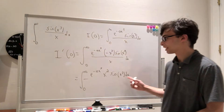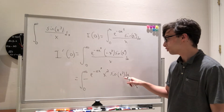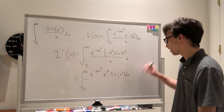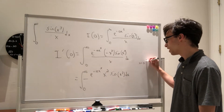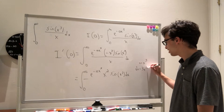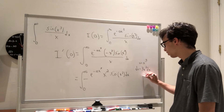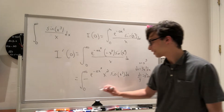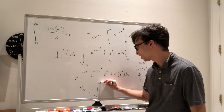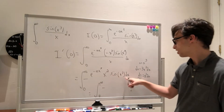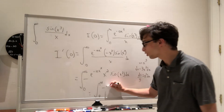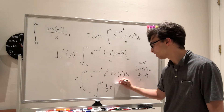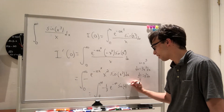This integral is actually not that bad at all, because we can do a u-sub: u equals x cubed. That will make the inside of the sine go away, the exponent become simple, and the x squared dx will go away in the du. So u equals x cubed, which makes du equal to 3x squared dx, so x squared dx equals du over 3. We now have negative one-third times the integral from 0 to infinity of e to the negative a u, sine of u, du.